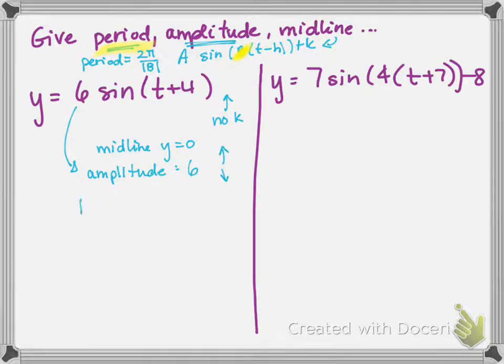And then for the period, I have the variable, the coefficient on t is 1, so my B value is 1. So if I use my formula where period equals 2π over B, the absolute value so we stay positive, then my period becomes 2π over 1. And so I just say that the period is 2π for this problem.